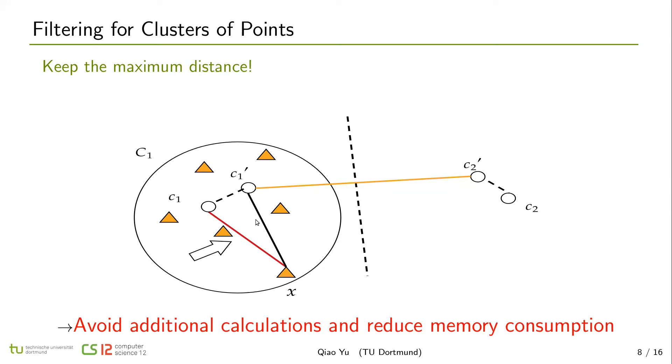And use x c1 plus c1 c1' as the maximum upper bound of cluster c1. So if this maximum upper bound is smaller than half of the distance c1' to c2', we know that all points in cluster c1 will not be assigned to c2. So we don't need to really compute distances from points to c1' and the points to c2'. By this bound, it keeps additional space complexity O(k) to avoid additional calculations and also reduces memory consumption by combining our following new lower bounds.